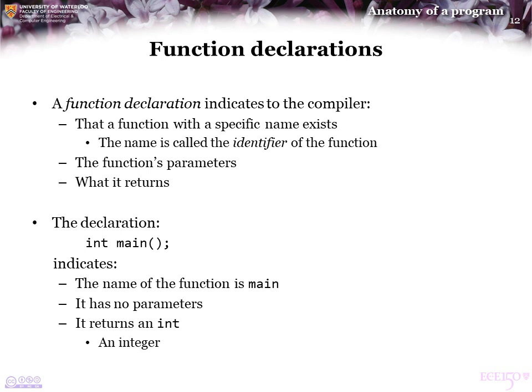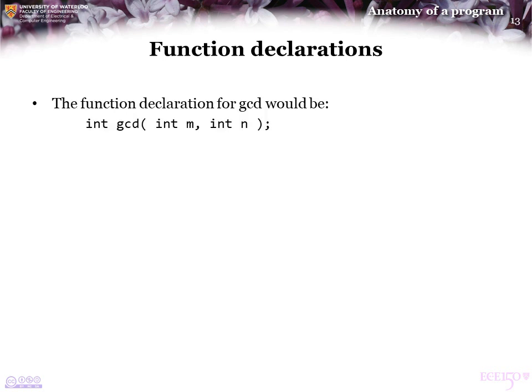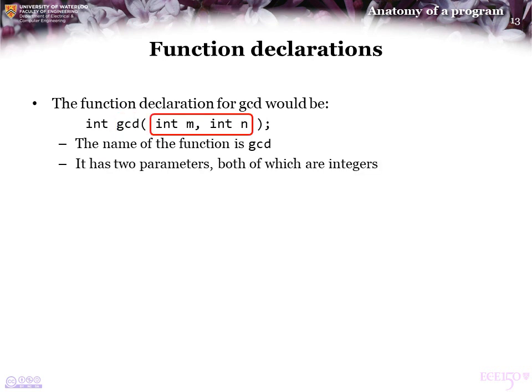You'll remember that main returned the value 0. The function declaration for the greatest common divisor function in C++ is a statement, so it ends in a semicolon. The name of the function is GCD — you could just as easily give it some other name, such as greatest common divisor, but GCD is shorter and quite recognizable. It has two parameters, both of which are integers with names M and N. It returns an integer, as we expect the GCD of two integers to be an integer, not something like a real number.